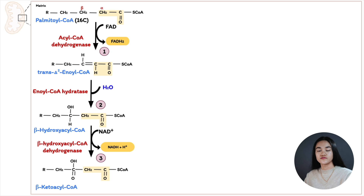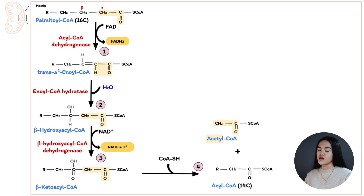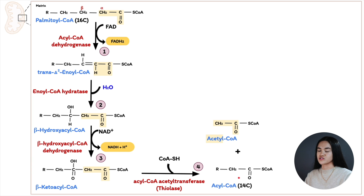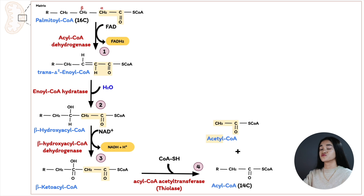Remember, when you hear dehydrogenase involved, it signals that NAD+ is involved, and in this reaction NAD+ is reduced to NADH. In the last step of the beta-oxidation cycle, we remove the acetyl-CoA. A free CoA binds to the fatty acid, forming fatty acyl-CoA — now two carbon units shorter — and releasing acetyl-CoA. This is catalyzed by acyl-CoA acetyltransferase. We have now completed one cycle of beta-oxidation, removed two carbon units as acetyl-CoA, and are left with a 14-carbon chain. The process repeats, removing two carbon units every cycle in the form of acetyl-CoA.